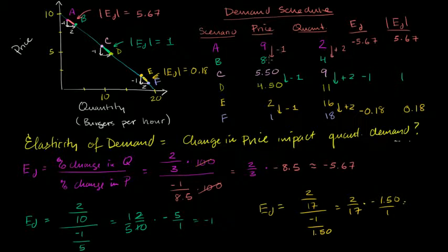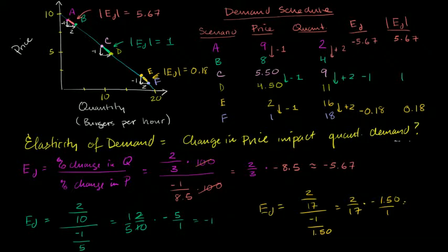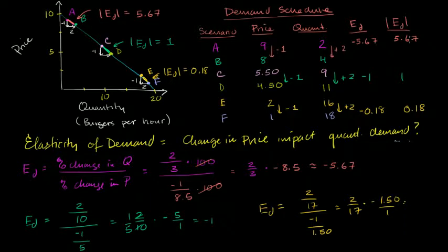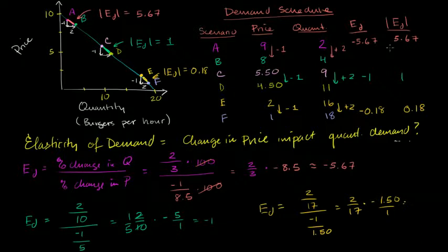So this price percent change was in the teens, while the quantity percent change is going to be 67% — two over an average quantity of 3 in this region. So you have a relatively large, actually quite large, percent change in quantity over a relatively small percent change in price: 67% over something roughly in the mid-teens percentage. That's why the absolute value of our elasticity of demand is a relatively large number. Without the absolute value you get a negative number because this is a downward-sloping line, but the magnitude is large.